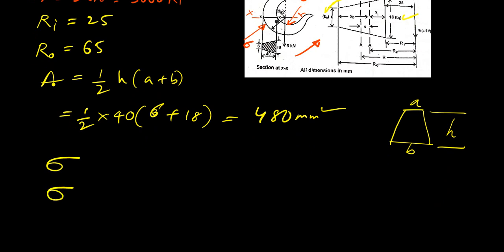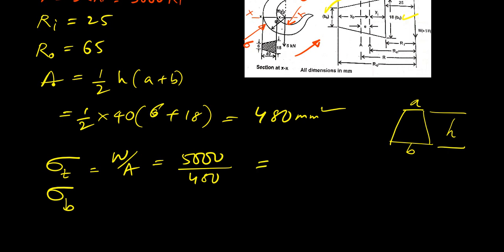The direct stress is acting as a tensile stress. The maximum direct tensile stress in section XX will be load divided by area, i.e., W/A. Load is 5000 N and area of cross-section is 480 mm². So 5000 divided by 480 gives 10.42 N/mm².